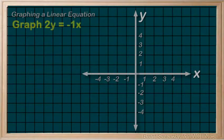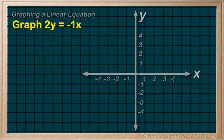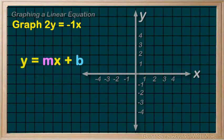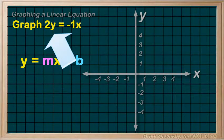Another one: we're asked to graph 2y equals negative one x. Now first of all, we recognize that this one isn't in our y equals mx plus b format—that is, the y isn't by itself.